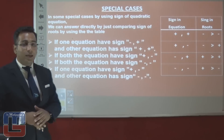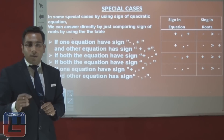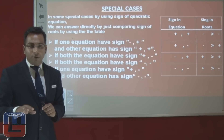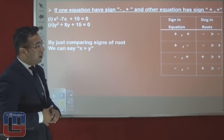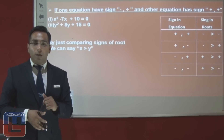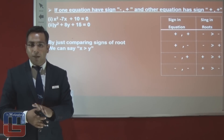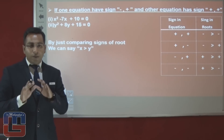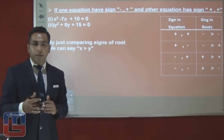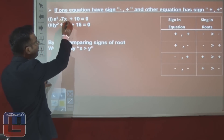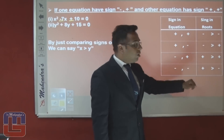In some quadratic equation questions, we can answer just by looking at the signs in the equation without computing roots. The five comparison signs available are: greater than, greater than or equal to, less than, less than or equal to, and equal to. Let us consider the first shortcut case.